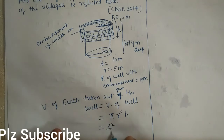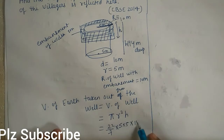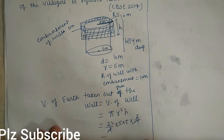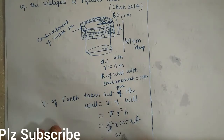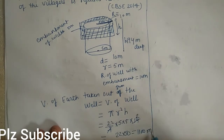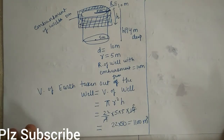So volume = (22/7) × 5 × 5 × 14, which gives 22 × 50 = 1100 meter cube. This is the volume of the earth taken out from the well.